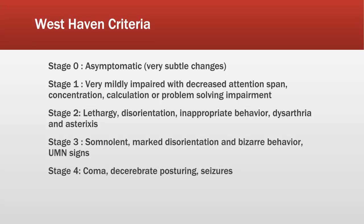Stage four would be someone in a coma with decerebrate posturing and possibly seizures. Looking at stages two, three, and four — those are the classical levels of consciousness described by Plum and Posner as lethargy, stupor, and coma. That framework makes it easier to remember.